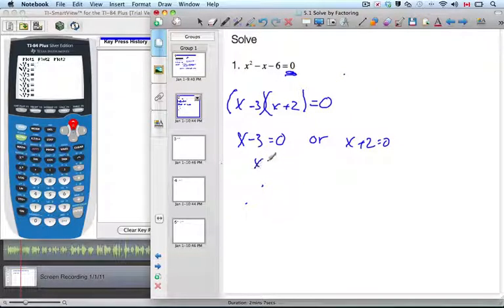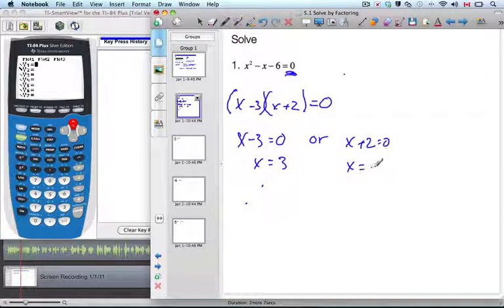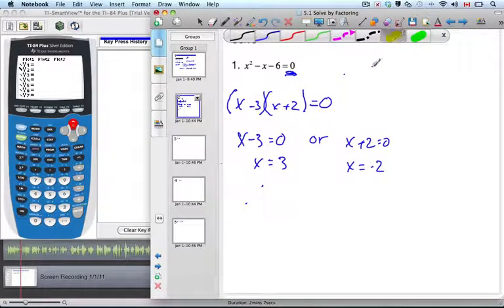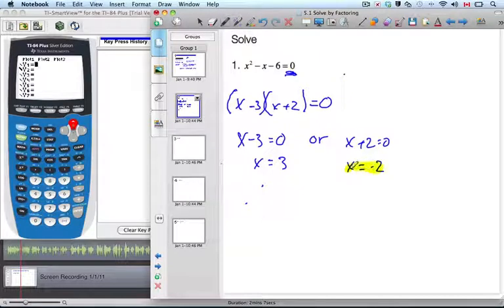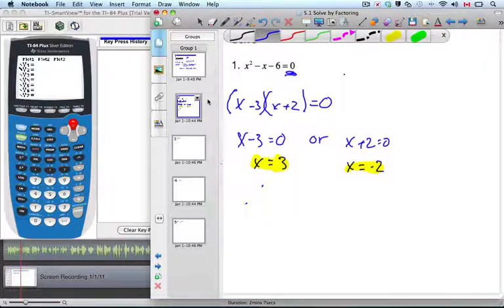And I therefore add 3 to both sides. I get x equal to 3. Or subtract 2, and I get x equal to minus 2. And I'm left with both of these two answers, which you need both. And that's a fairly simple example. Let's try another example.